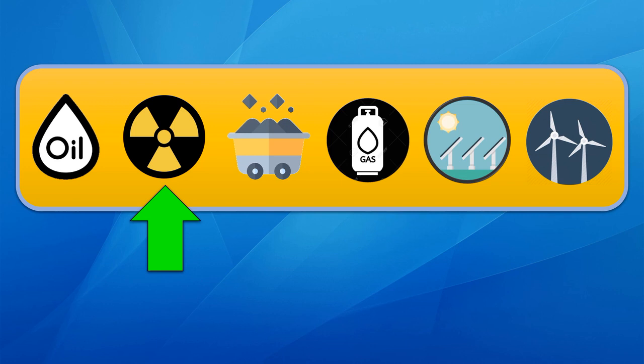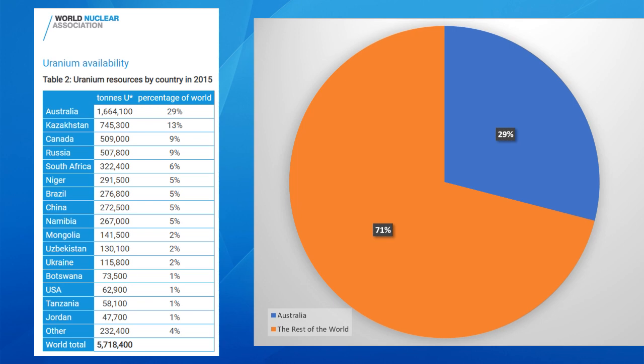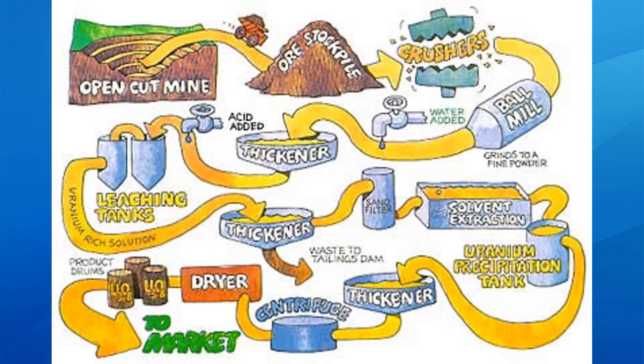The next energy resource is nuclear. Most of the world's uranium is found in Australia — about 29% of the world's available uranium. The process to extract and transform it into a usable compound is very tricky: you need open-cut mines, stockpile and crush it, add water, thicken it, leach it, filter it through sand, do a solvent extraction, use precipitation tanks, a thickener, centrifuge, dry it, drum it, then put it to market. It's a really in-depth process. The uranium itself is quite rare and can't rebuild itself, so it's non-renewable.